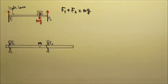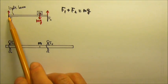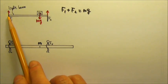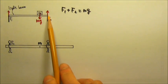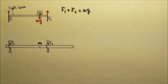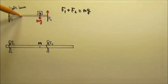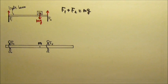For net torque equals to zero, we would have to have a fulcrum. There is no fulcrum in this problem, but we can make one up, because if nothing is moving, it does not matter whether the fulcrum is real or not. For example, we can pretend that there is a fulcrum right here, because the beam does not rotate anyway, so it does not matter whether this fulcrum is real or not.